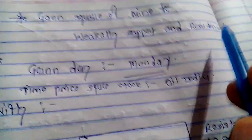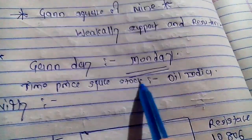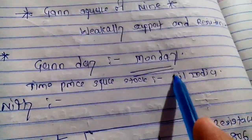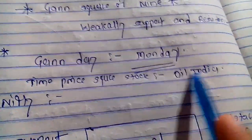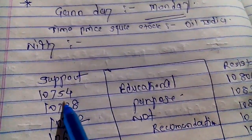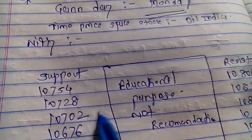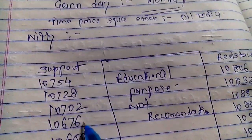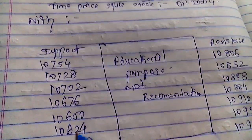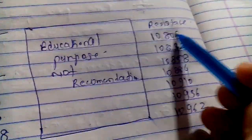GAN Square of 9 weekly support and resistance. GAN day is Monday. Time price square — stock, oil, India. This is for educational purpose, not a recommendation. Nifty supports: 10,754 / 10,728 / 10,702 / 10,676 / 10,650 / 10,624 / 10,598. Resistance: 10,806...